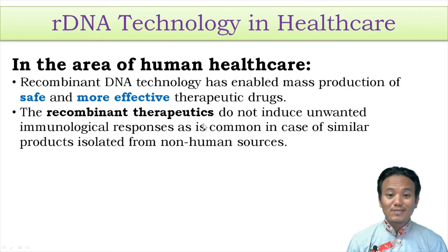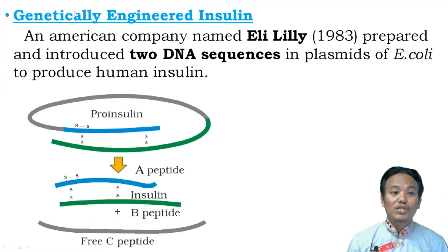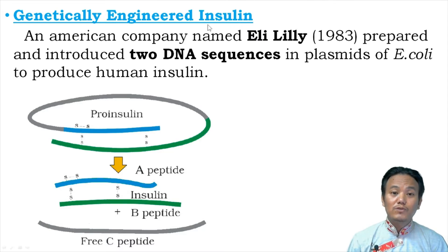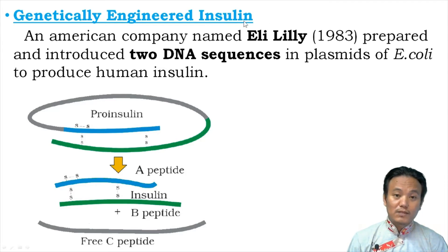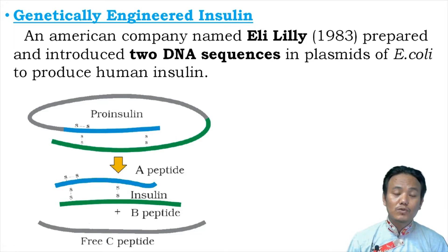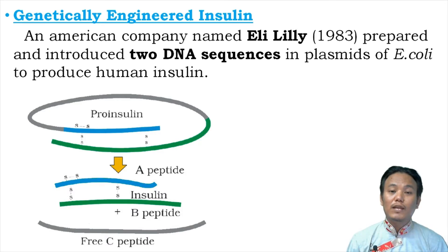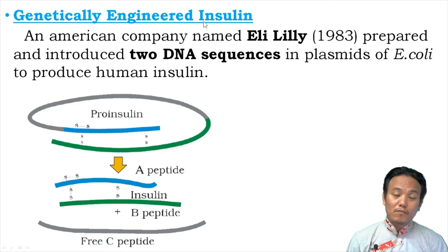To understand this better, let us take the example of genetically engineered insulin. Insulin is a hormone involved in blood sugar regulation. A person suffering from Type 2 diabetes needs to take regular shots of insulin hormone because the pancreatic cells of the diabetic patient cannot produce insulin, so the patient cannot maintain his or her blood sugar level.